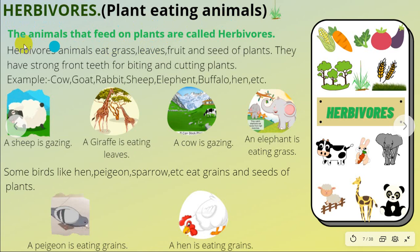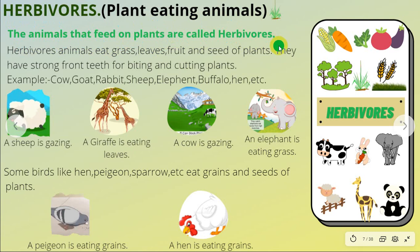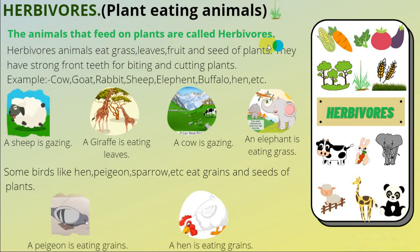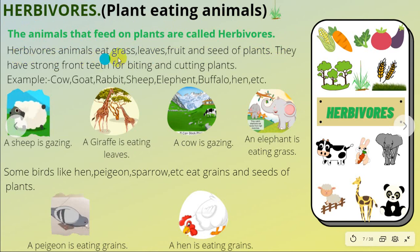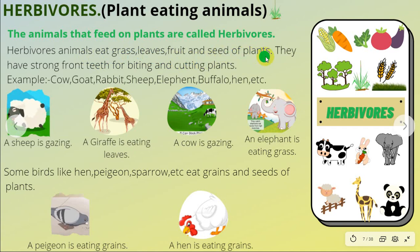Animals that feed on plants are called herbivorous animals. Herbivorous animals eat grass, leaves, fruits, and seeds of plants.